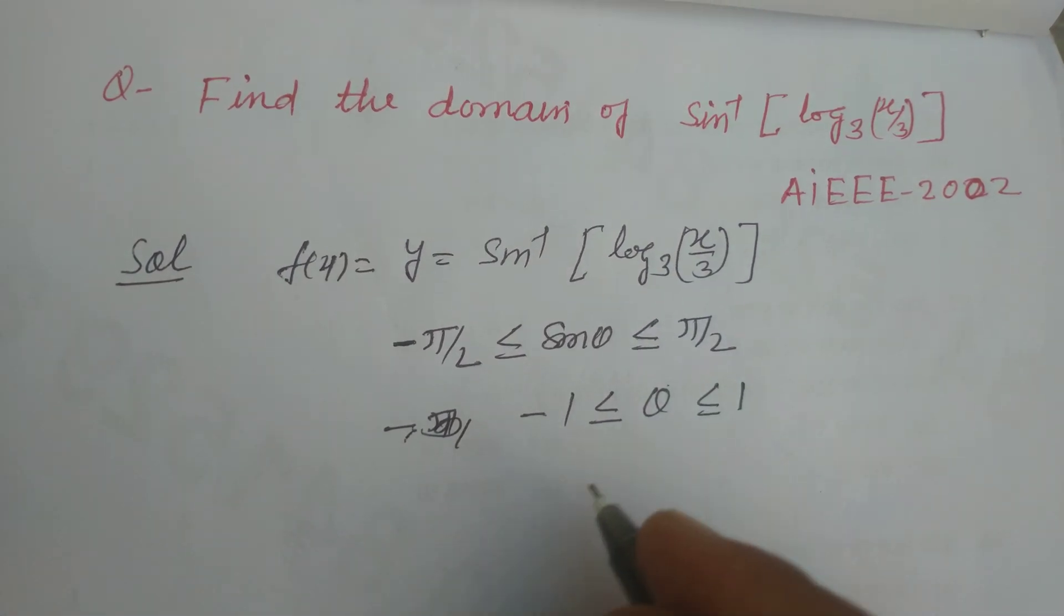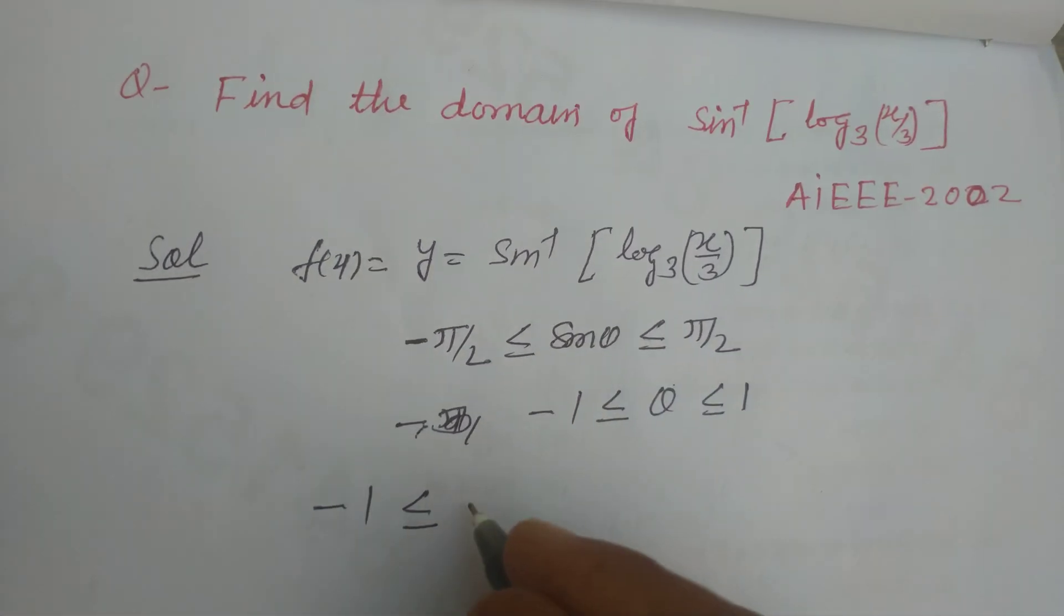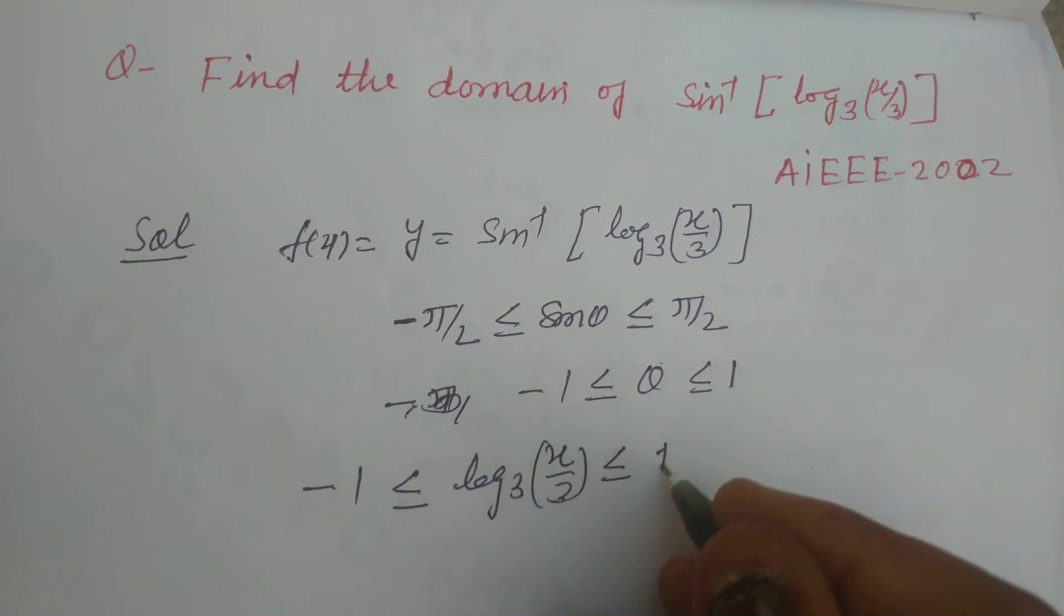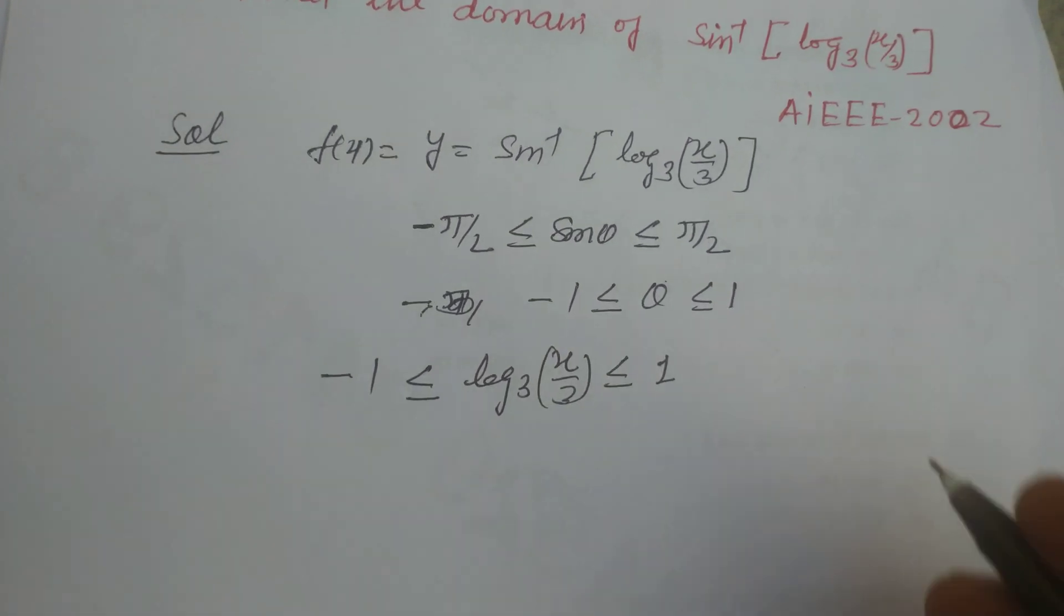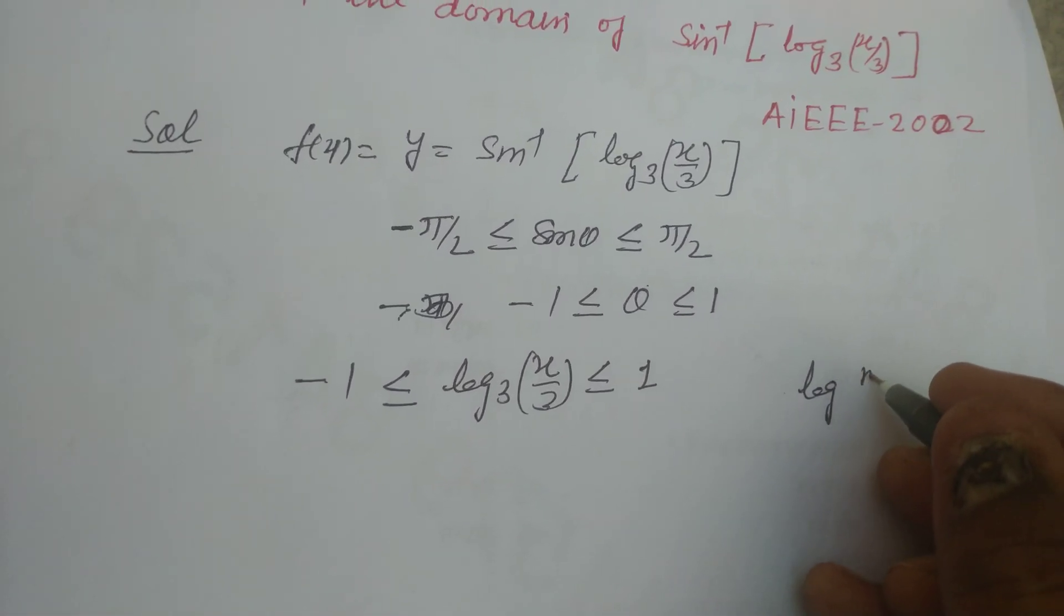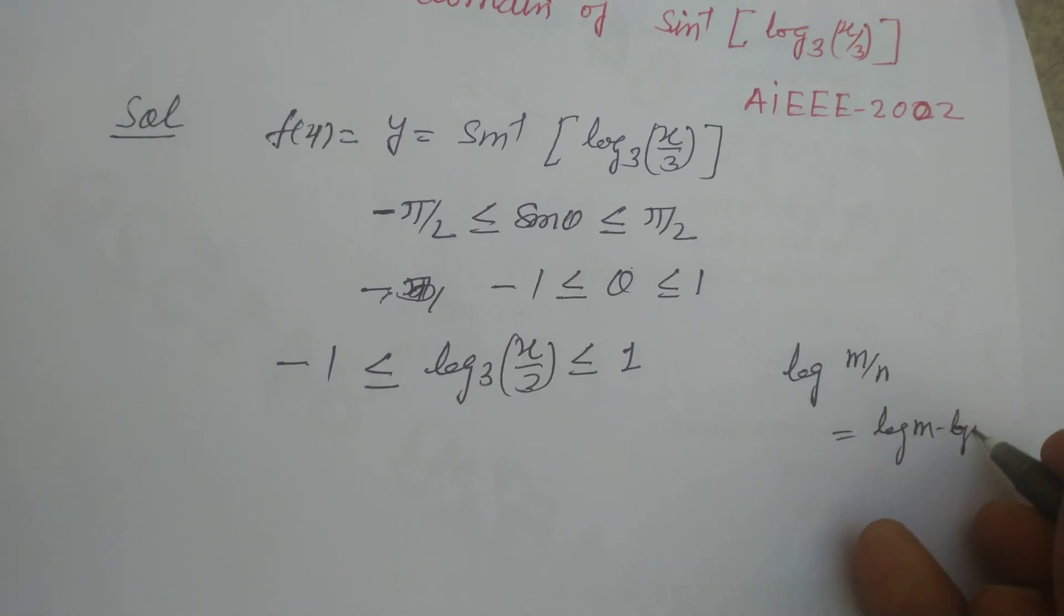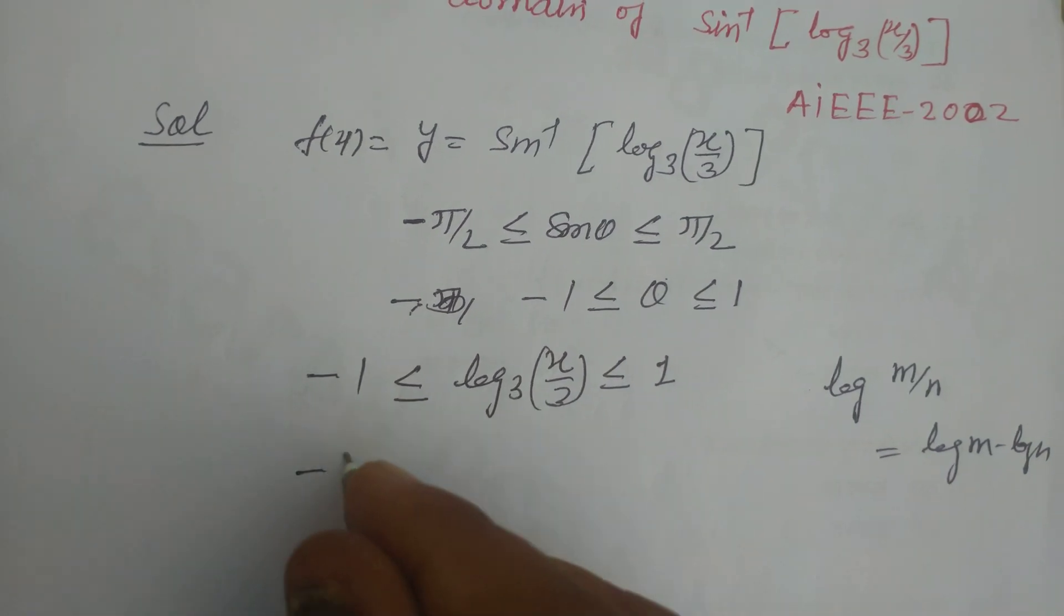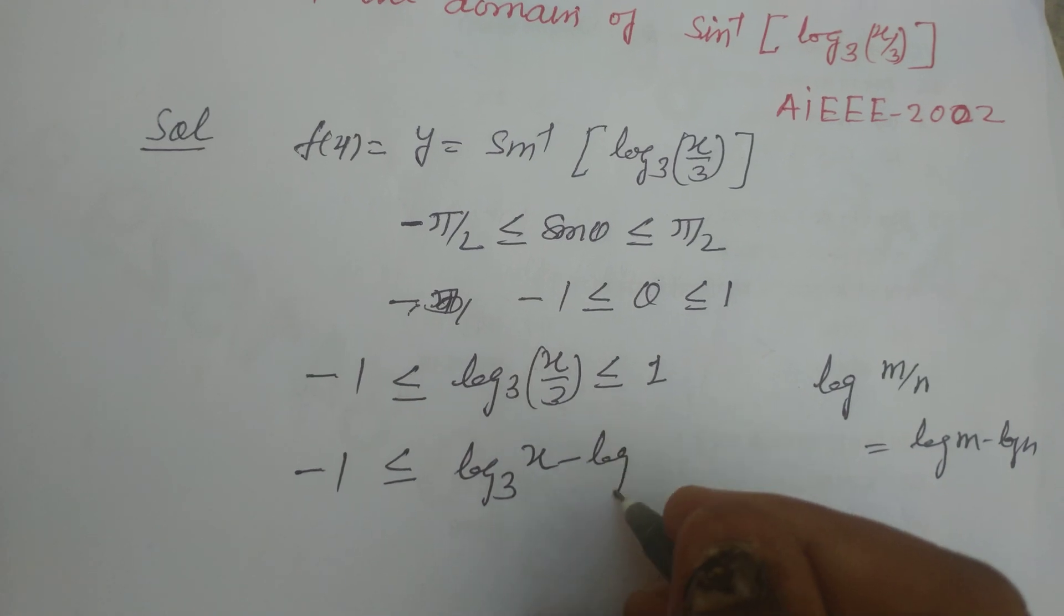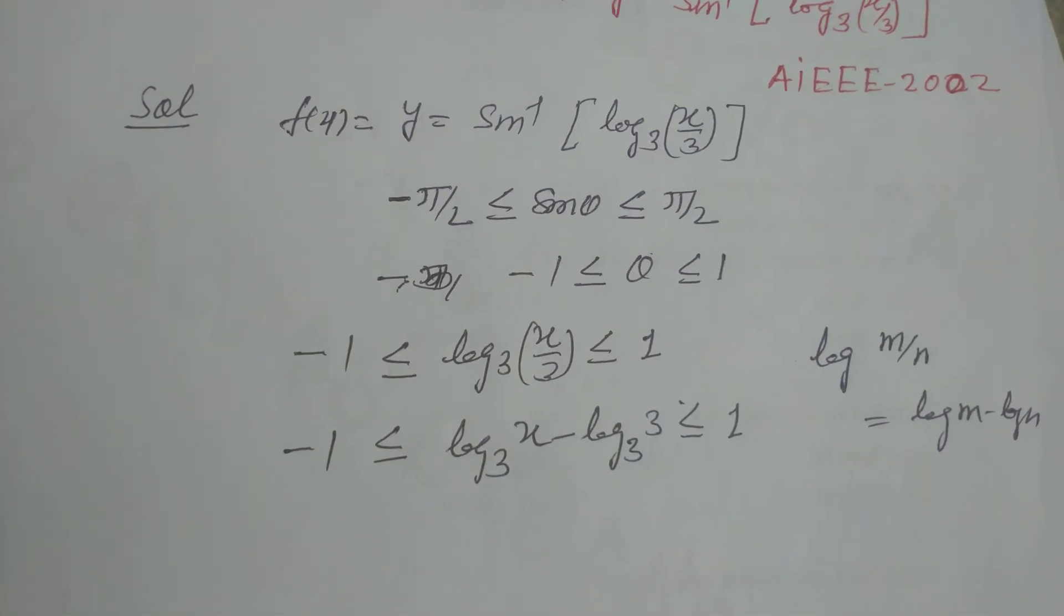Now we put the value of theta from here which is log base 3 of x by 3. And you know that log m upon n equals log m minus log n. So we put here minus 1 less than or equal to log base 3 of x minus log base 3 of 3 less than or equal to 1.